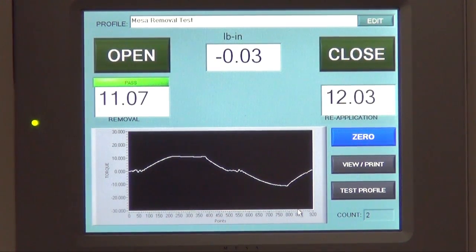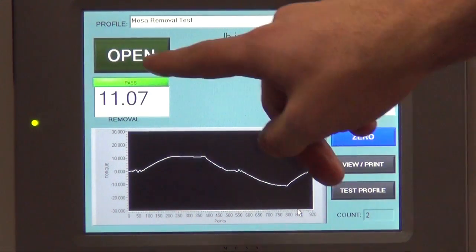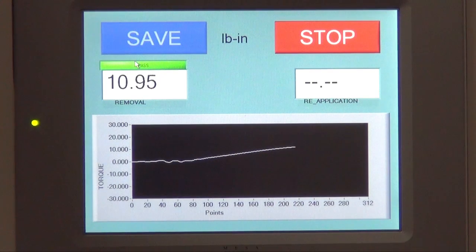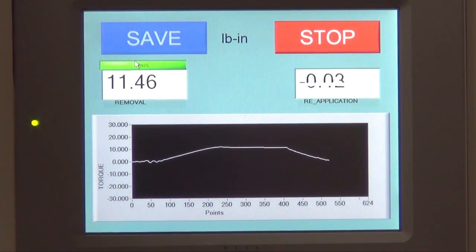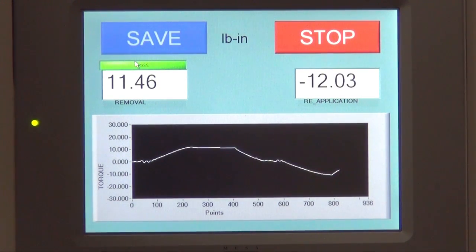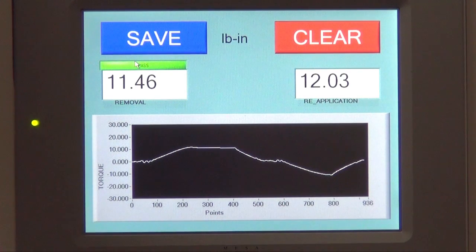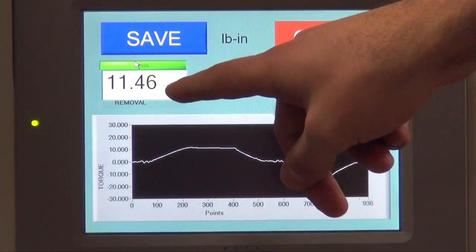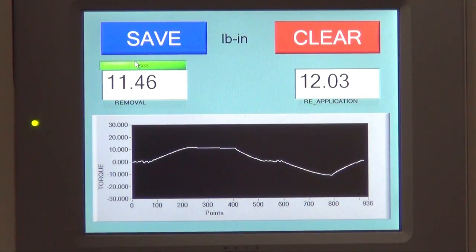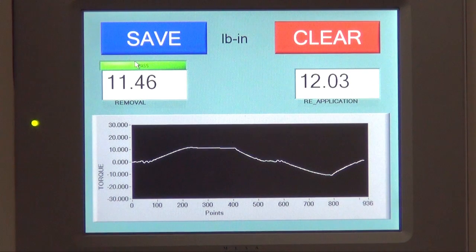Once the bottle is secure and the chuck is engaged properly on the cap, simply press the open tab to start test. The test should only take a couple seconds. On this screen, it will show you what your peak removal test was on the left hand side and also what it reapplied the cap to on the right hand side.